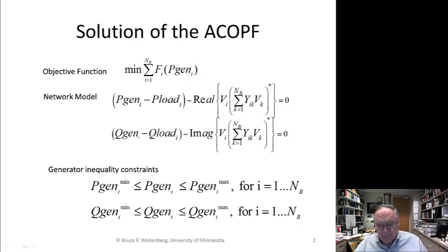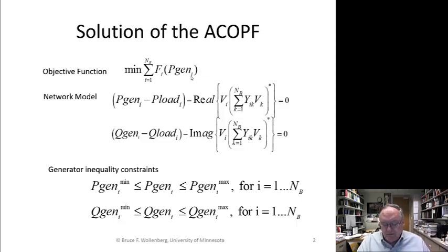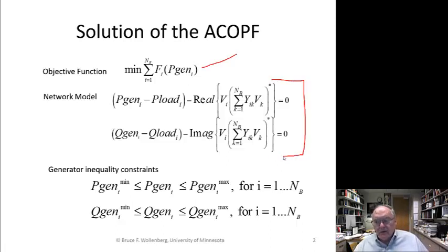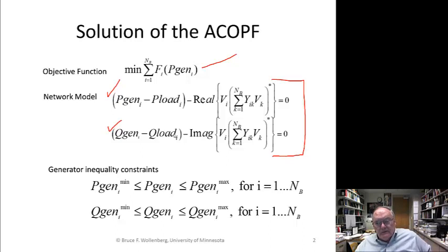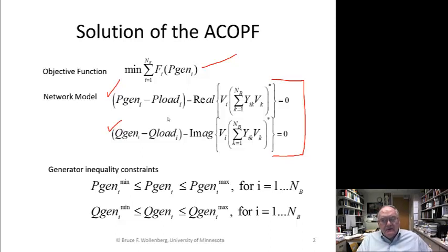We said that first we're going to have the same objective again: the minimum of the sum of the operating costs. Then we have our AC power equations — one equation for real power and one for reactive power for every bus. So there are two equations per bus, except for the reference bus. The reference bus voltage magnitude and phase angle are considered constants.